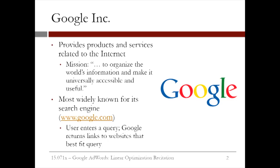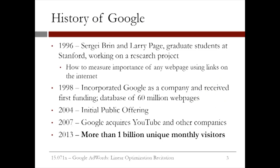How did Google come about? The idea of Google originated as a research project of two people, Sergey Brin and Larry Page. This was in 1996, while they were still graduate students at Stanford University. Their idea, in a nutshell, was to measure the importance of a web page to a particular query, not just by measuring how much that query occurs in that web page, but also by considering the links to that web page from other web pages.